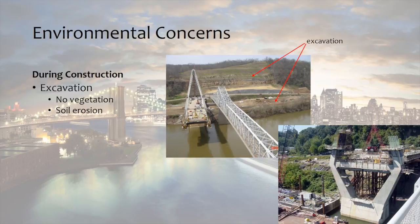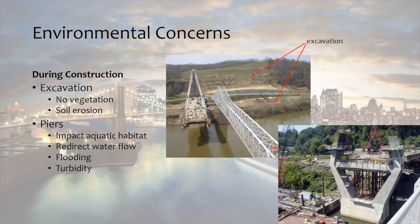Remember that environmental impacts are not just limited to turbidity. When we construct piers, we are inadvertently changing the aquatic habitat and redirecting the water flow. By changing the water flow, piers contribute to flooding and turbidity because currents tend to swirl around the piers and carry away some of the surrounding soil. Can you think of any other ways construction might impact the environment?